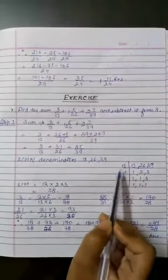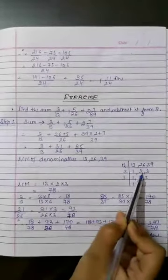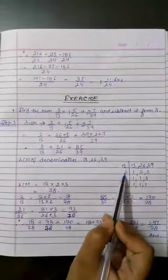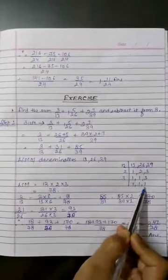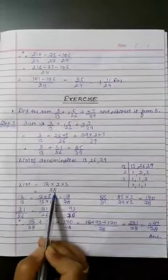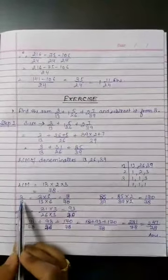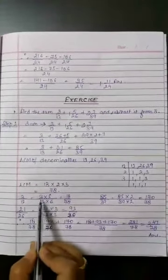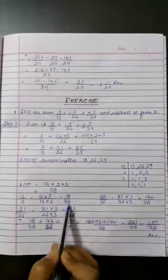So we start dividing by 13: 13 ones are 13, 13 twos are 26, 13 threes are 39. Next, we take 2 and 3. So the LCM will be 13 into 2 into 3, that is 78. We take the first fraction 3 by 13 and multiply both numerator and denominator by 6, getting 18 upon 78.